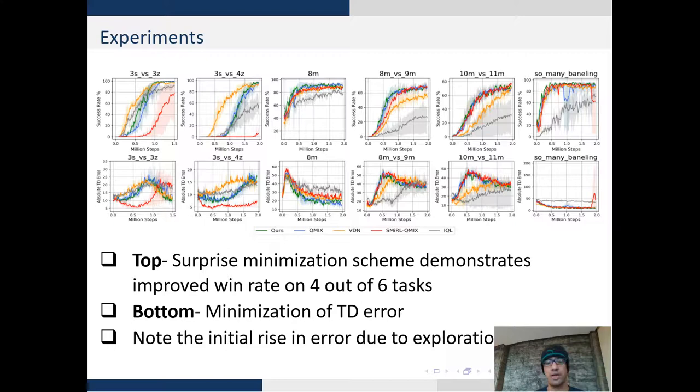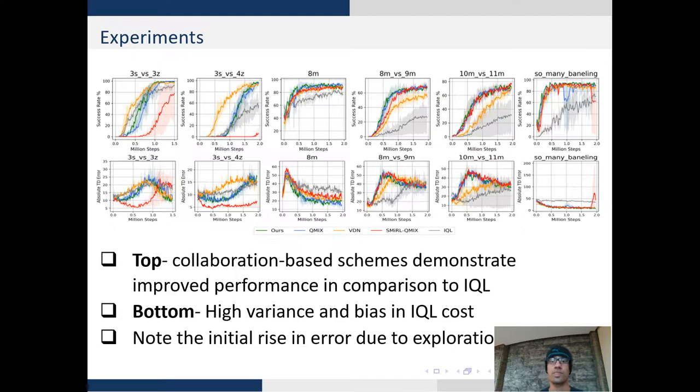I would like to point out that the initial rise in error is due to exploration because we do not have access to the state distribution and we need to approximate the distribution. We manually force the agents to explore the environment so that they can gain sufficient information about its components.